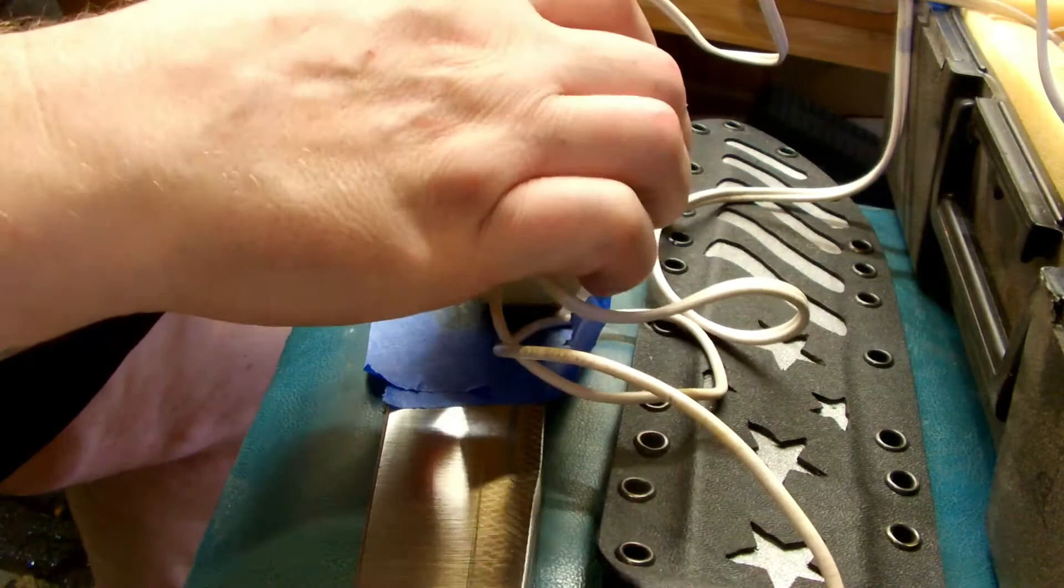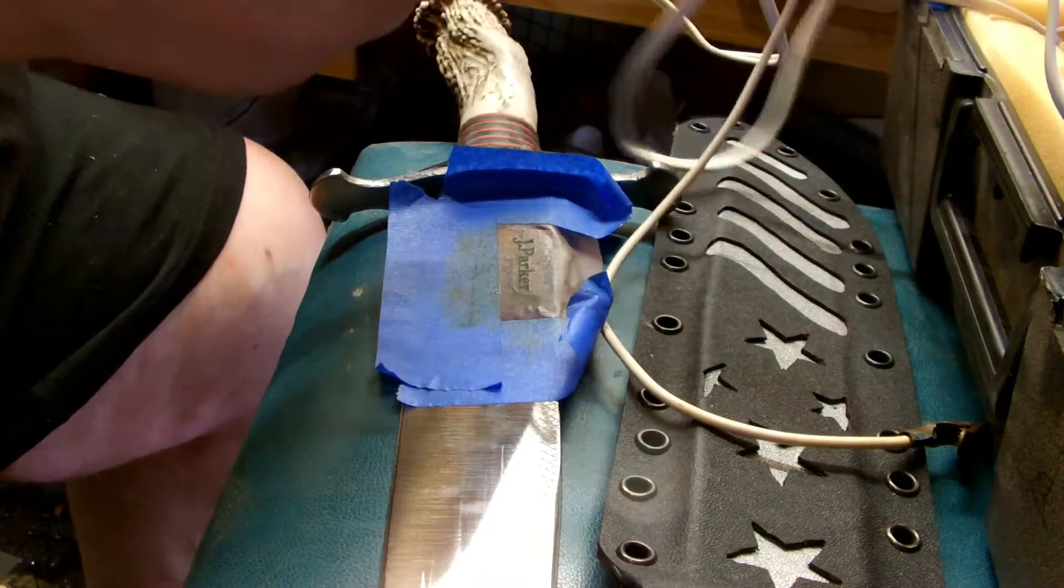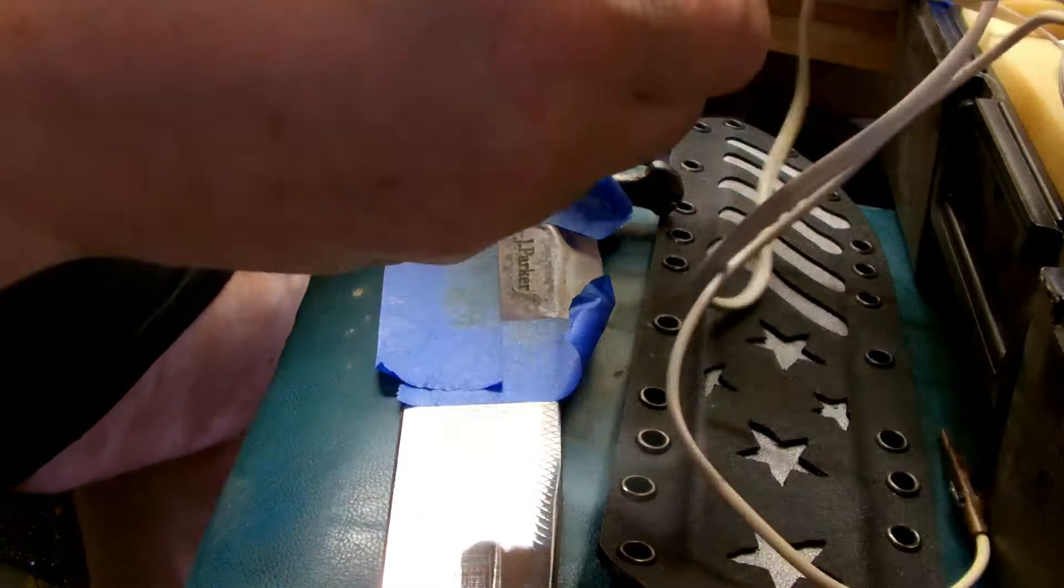The shinier the surface is, the less it's going to etch. Basically, you're trying to create a little bit of a corrosion in there, and it starts eating away the metal. But if it's shiny, it won't really etch the surface very well.